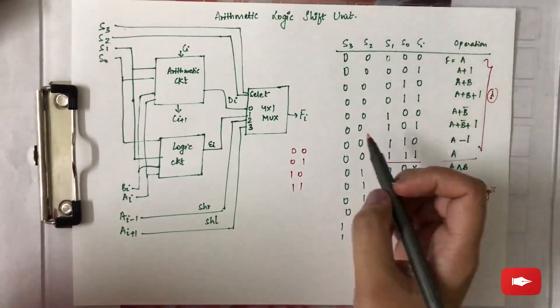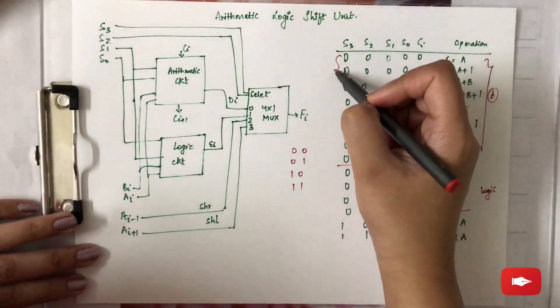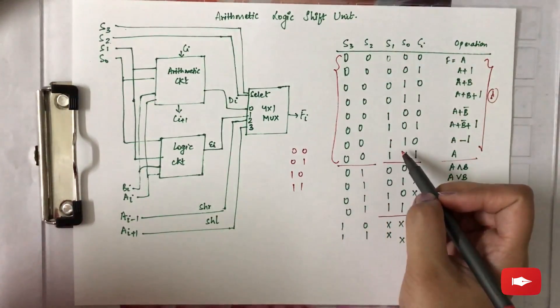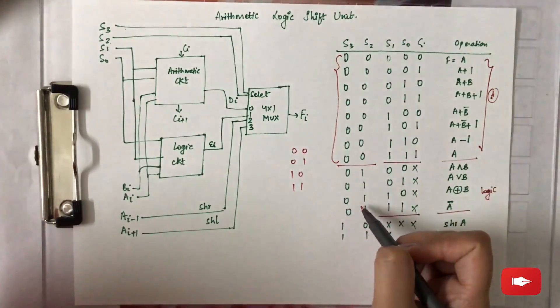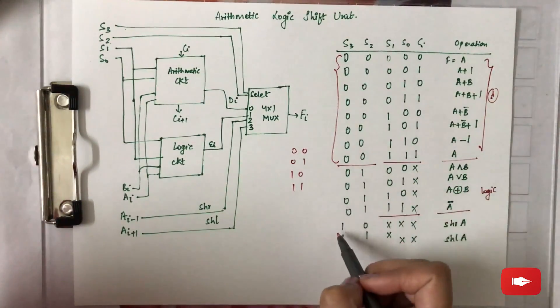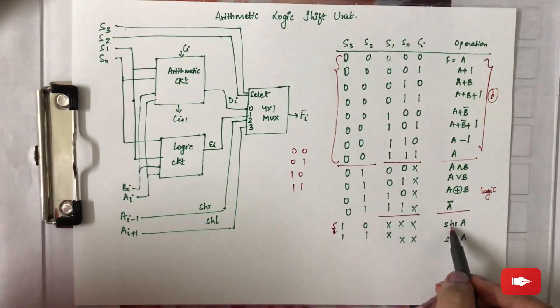See, s3 and s2 can be 0 0, 0 1, 1 0, 1 1. So for the 0 0 value it was arithmetic circuit, for 0 1 it was logic, for 1 0 it is shift right, and for 1 1 it is shift left.